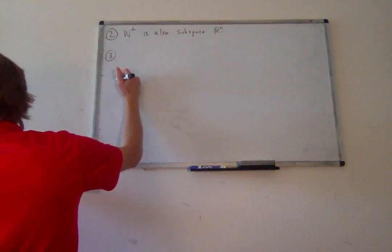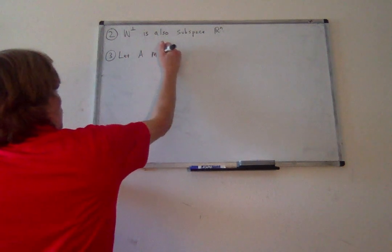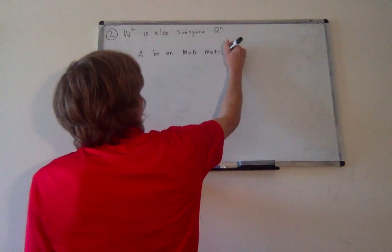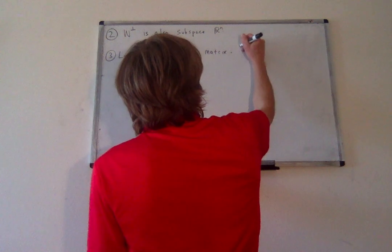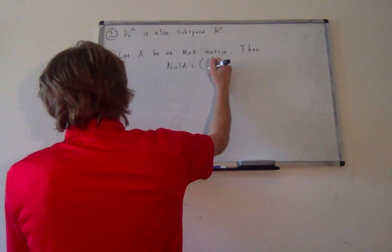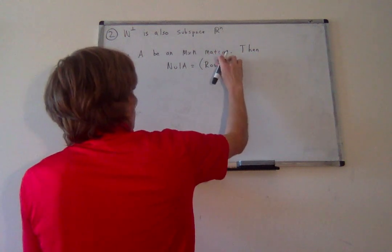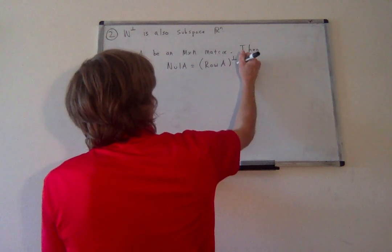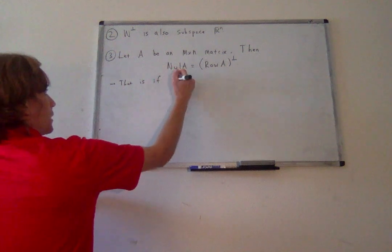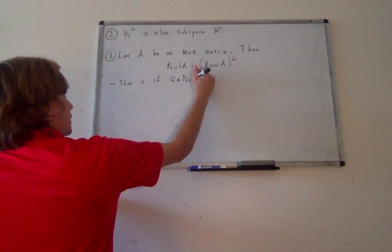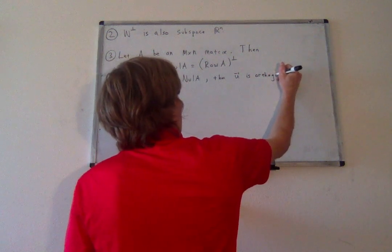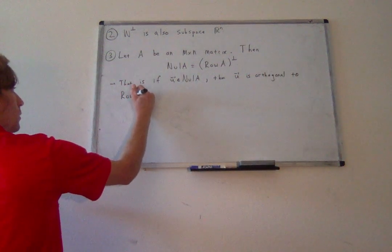Now the last one, which I think is the coolest. If we take any m by n matrix A, then the null space of A has orthogonal complement equal to — or I should say the null space of A is the orthogonal complement of the row space of A. That is, if u is in null(A), then u is orthogonal to row(A). Why is this?